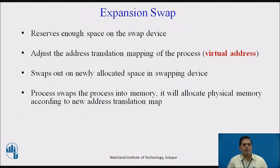Now we go to another type called expansion swap. When a process requires more memory than it is currently allocated, the kernel performs an expansion swap. To do this, the kernel reserves enough space in the swap device, and the address translation mapping is adjusted for the new virtual address space, but physical memory is not allocated. The kernel then swaps the process into the assigned space in the swap device. Later, when the kernel swaps the process back into main memory, it assigns memory according to the new address translation mapping and zeros out the newly allocated space.